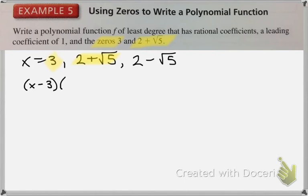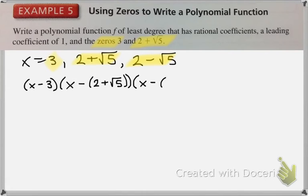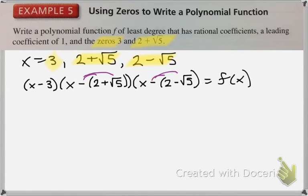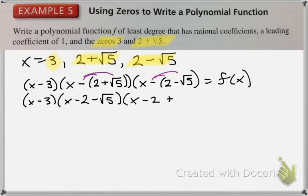So if my zero is positive 3, my factor is going to be x minus 3. If my zero is 2 plus root 5, my factor is going to be x minus (2 plus root 5) — you need to group this, it is extremely important, you are subtracting the entire quantity. And if my zero is 2 minus root 5, I am going to have x minus (2 minus root 5), grouped. So we have x minus 3, times x minus (2 plus root 5), times x minus (2 minus root 5) equals f of x.